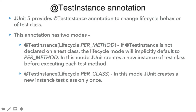The other mode is @TestInstance lifecycle per class. In order to use lifecycle per class mode, we need to provide this annotation on top of the test class. What this annotation does is in this mode, JUnit creates a new instance of the test class only once. So per method means creation of a new instance per test method, and per class means the new instance of the test class will be created only once.